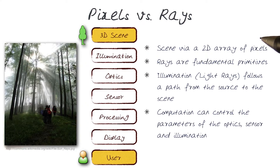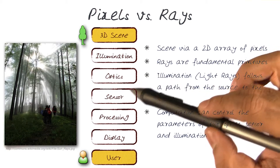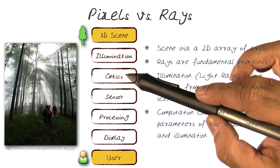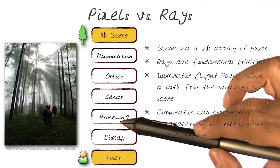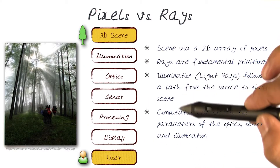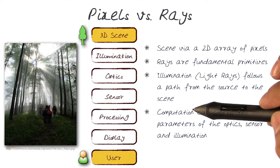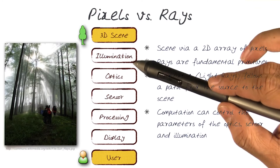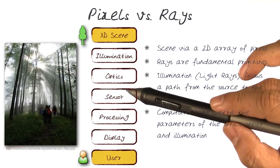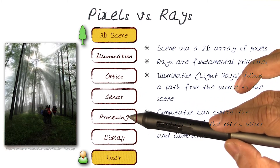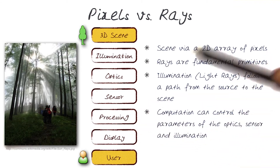More importantly, we're interested in how we can use computation to control all parameters of the optics and the sensor — that is, the process of illumination, rays of light going through optics to the sensor — which allows us to generate the pixels we do image processing on. We want to use computation to control how illumination creates rays of light, which are then controlled with optics to create information on a sensor, generating the pixels we process to produce an image.